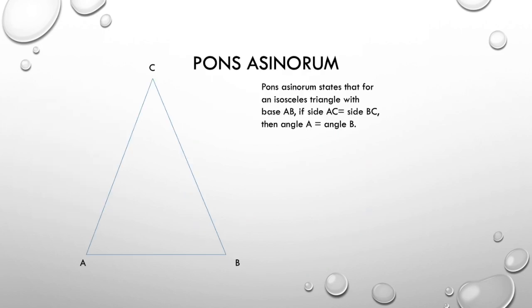Given triangle ABC is an isosceles triangle, so two of its sides have equal length, AC equals BC. The base angles of an isosceles triangle are the two angles at the end of the base, and they are necessarily equal. So we call this Pons Asinorum.